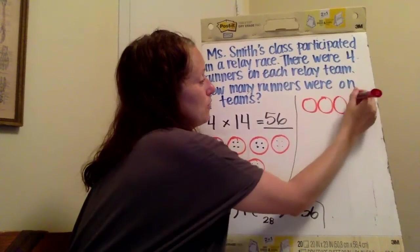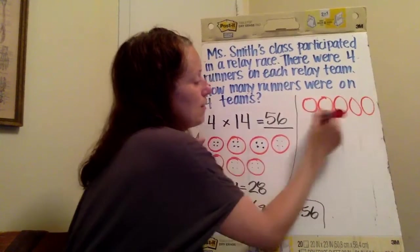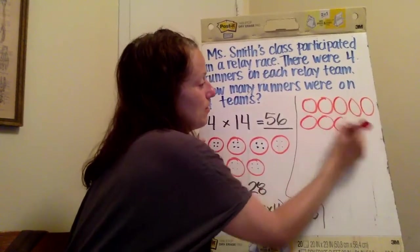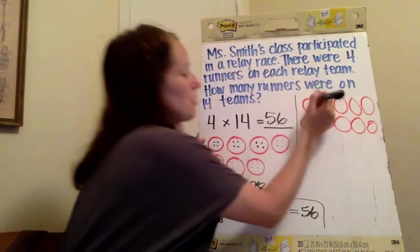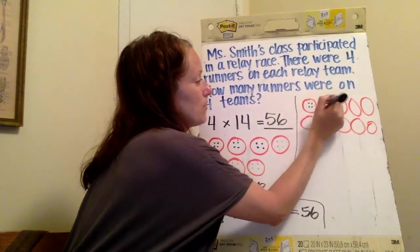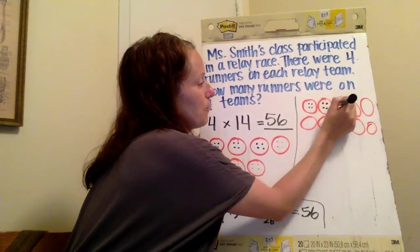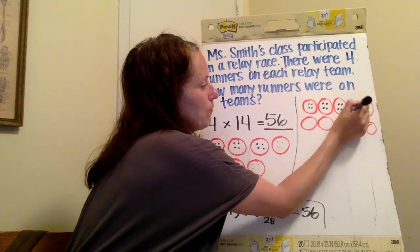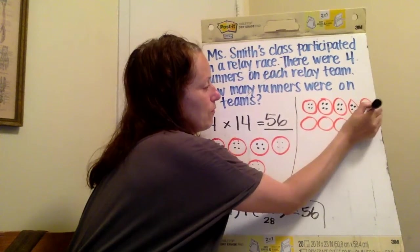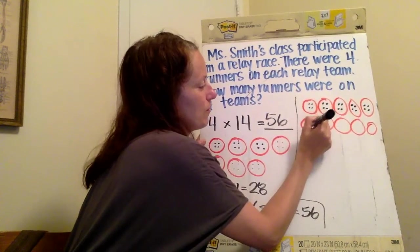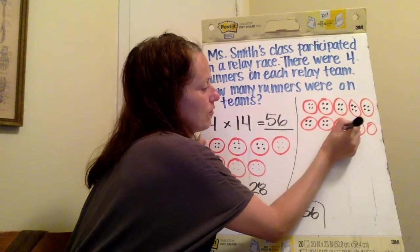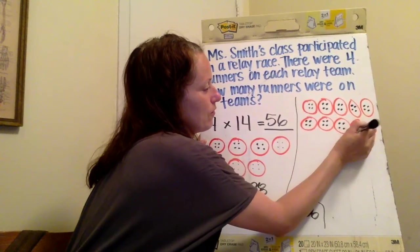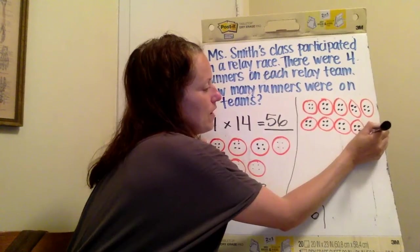One, two, three, four, five, six, seven, eight, nine, ten. Each of these, remember, has four runners in each group.